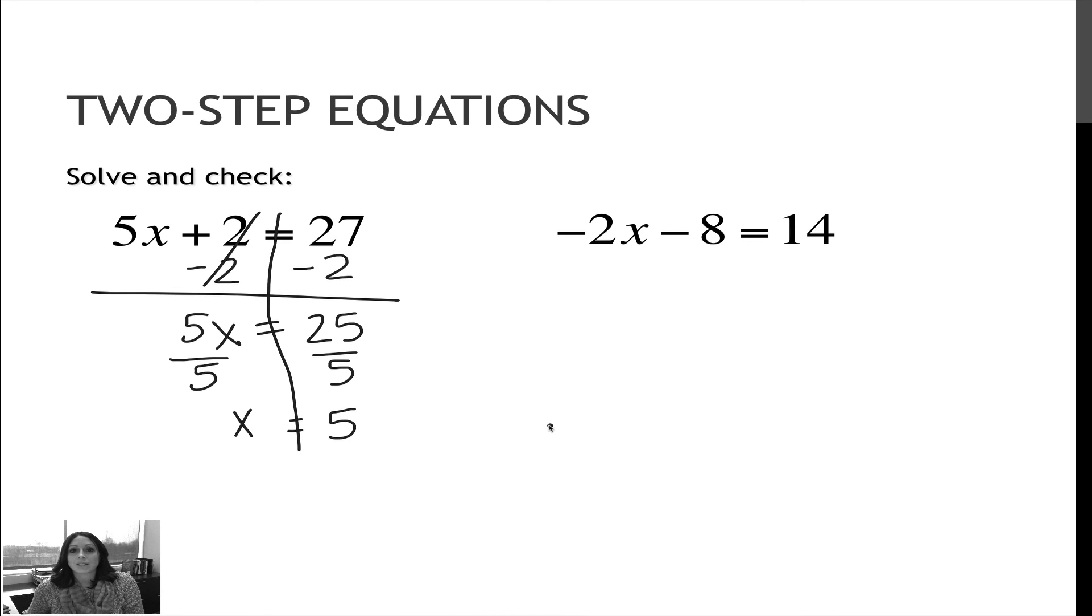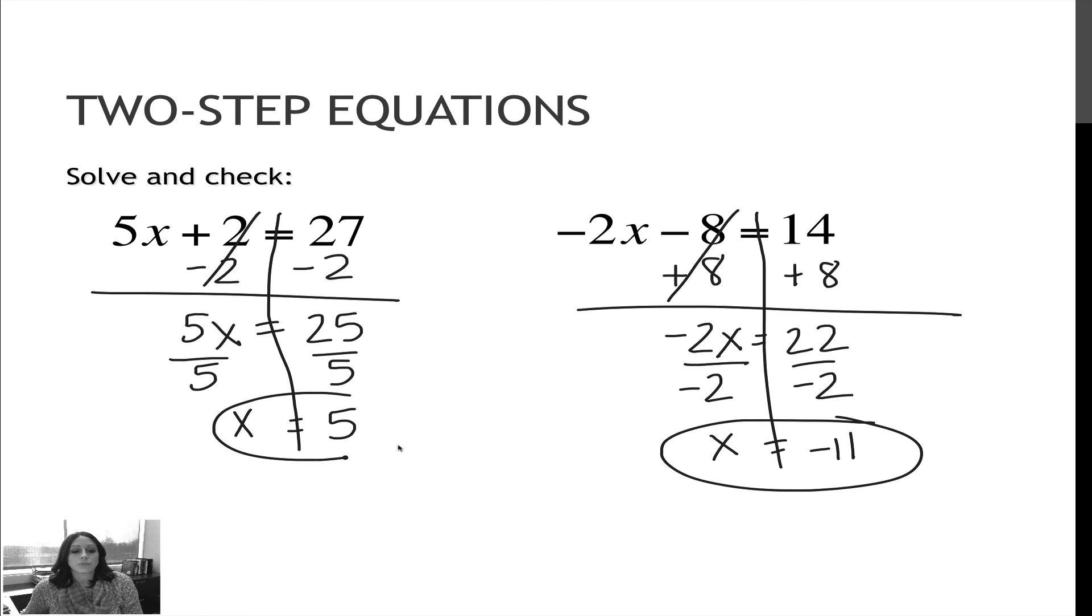Now, I'm not going to do the checks on these, just because I don't want to have a 30-minute video that you have to watch, but you can certainly plug that 5 back in and check it to make sure that both sides equal out. For my second, again, I got just one variable on one side. I'm trying to get that variable alone, so I have to undo the minus 8. So, I'm going to add 8 to each side. On the left side, the 8's cancel, and I get negative 2x. On the right, 14 plus 8 is 22. And now, this is negative 2 times x. To undo multiplication, I divide. I divide on both sides to get x equals negative 11. And again, I will leave the check for you to do on your own.